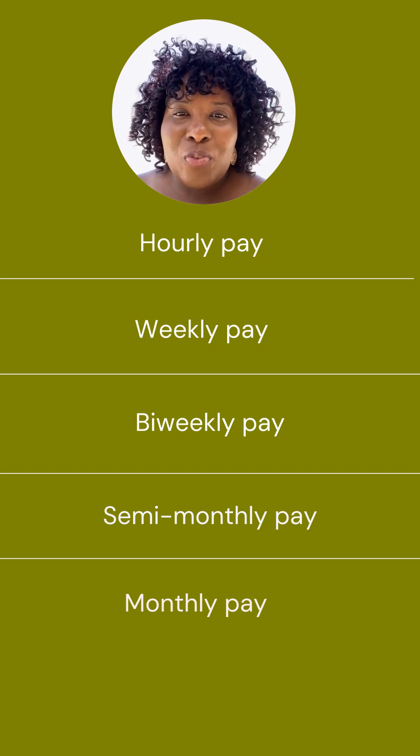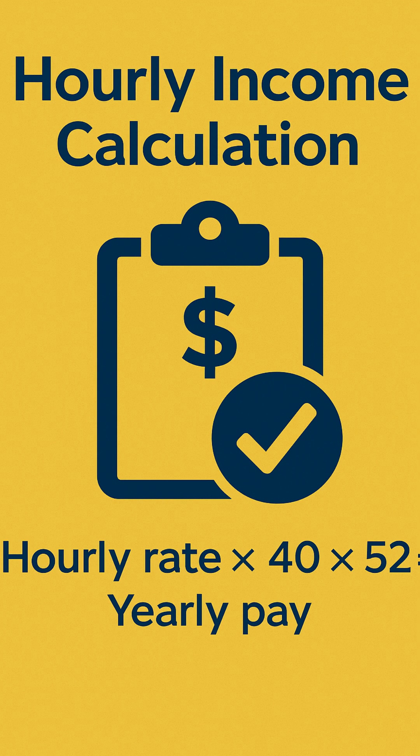For hourly rate, multiply by 40 hours per week, then multiply by 52 weeks in a year. Example: $20 an hour times 40 times 52 equals $41,600 annual income.